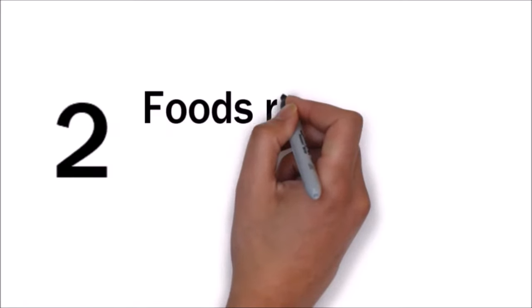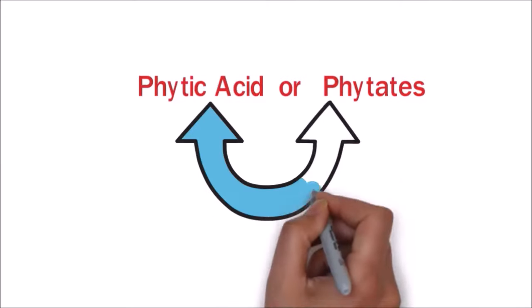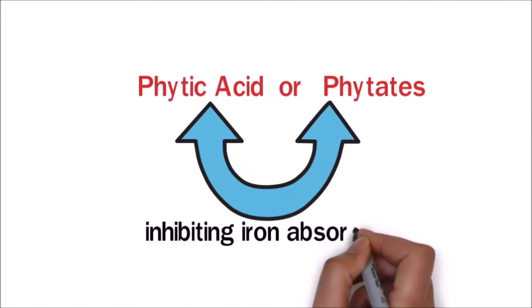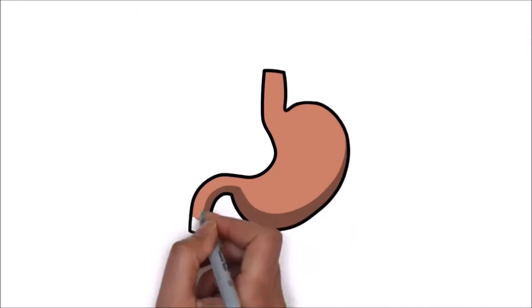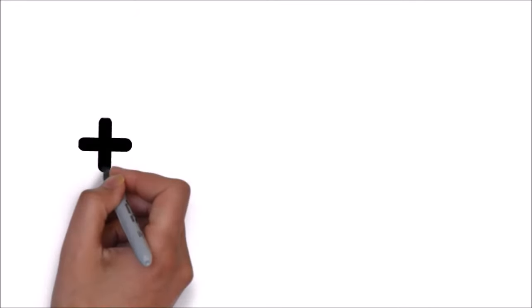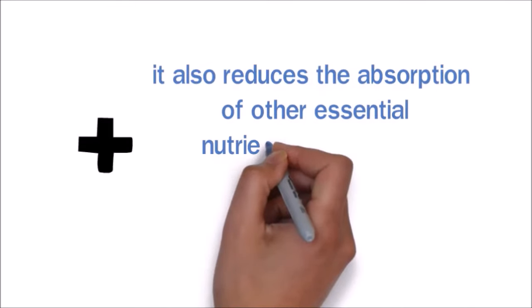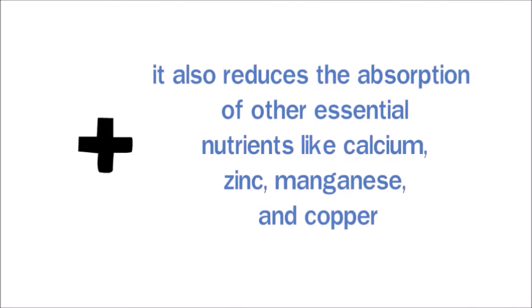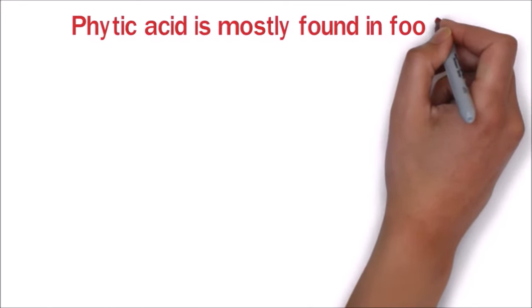Number 2: Foods rich in phytic acid. Phytic acid or phytates is also associated with inhibiting iron absorption, as it usually binds with the iron in your digestive tract. In addition to this, it also reduces the absorption of other essential nutrients like calcium, zinc, manganese, and copper.